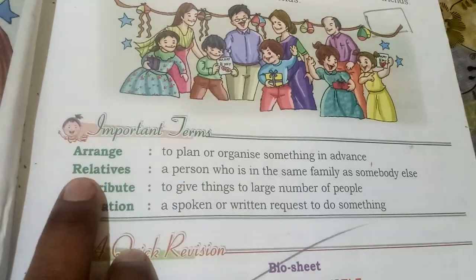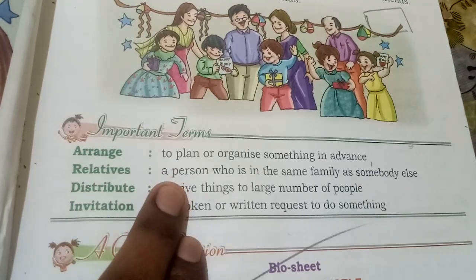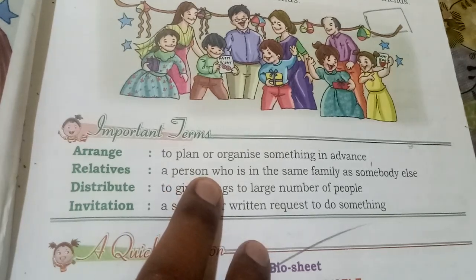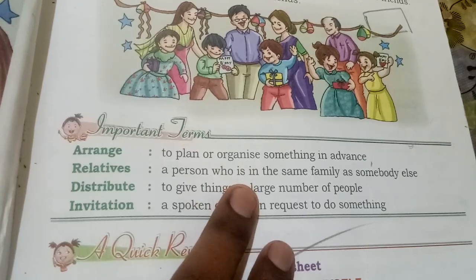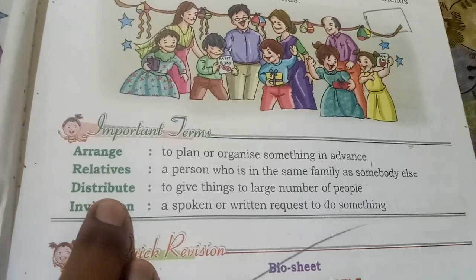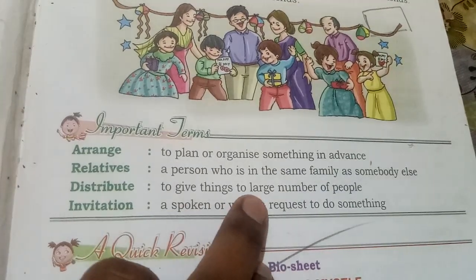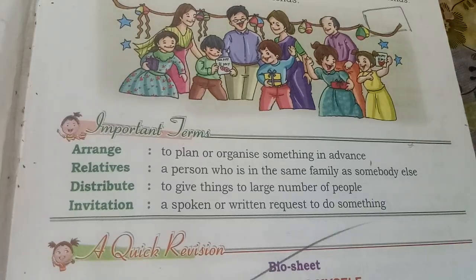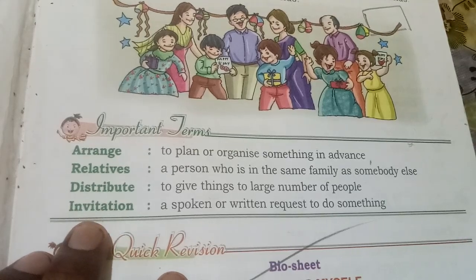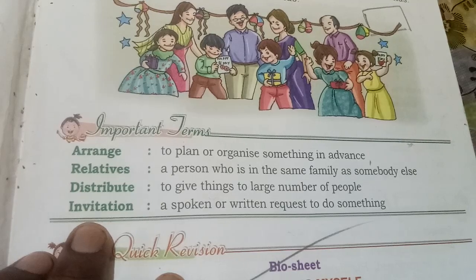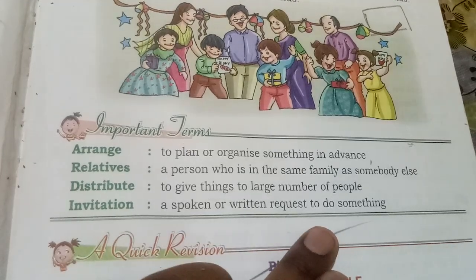Number two: 'relatives' — relatives ka matlab hota hai rishtedar, for example uncle, aunt, grandfather, grandmother. Three: 'distribute' — distribute ka matlab hai baantna, to give things to a large number of people, yani bahut saare logon mein baantna. And 'invitation' — invitation ka matlab hai nimantran, a spoken or written request to do something.